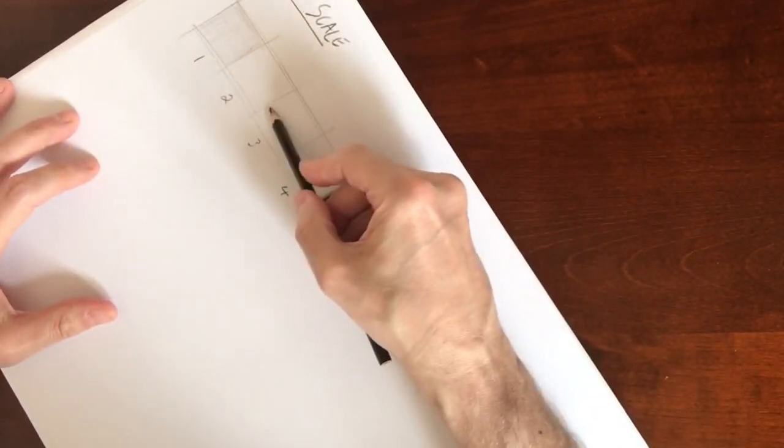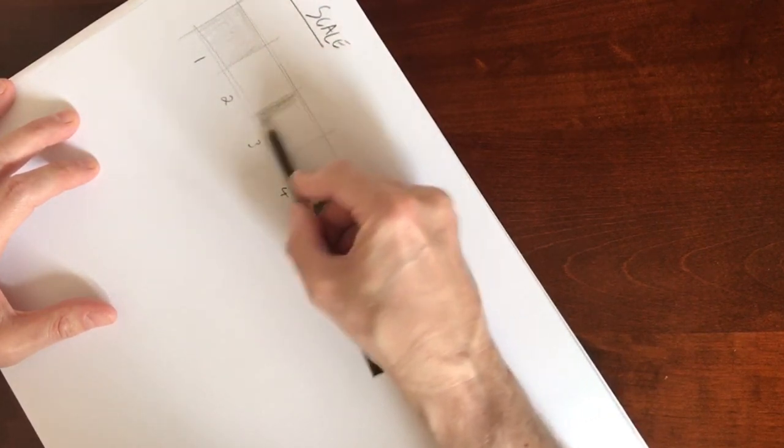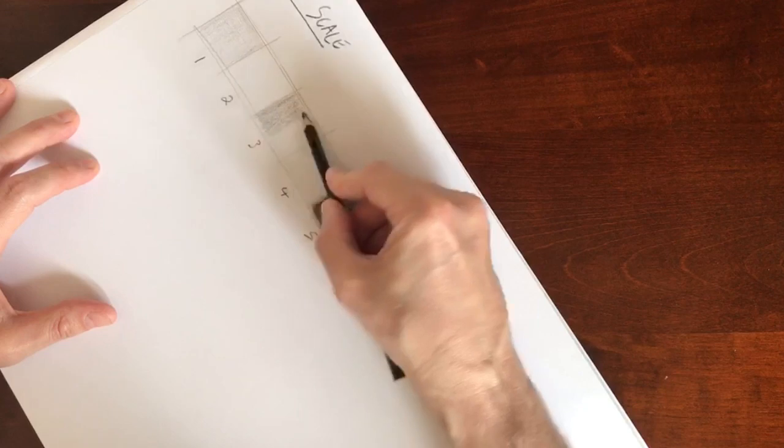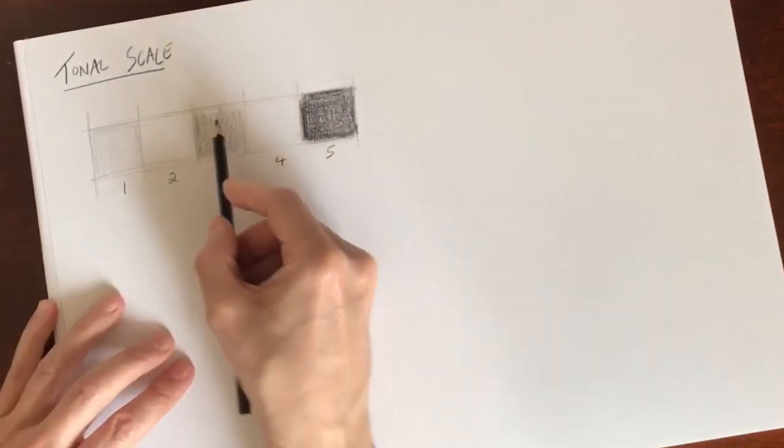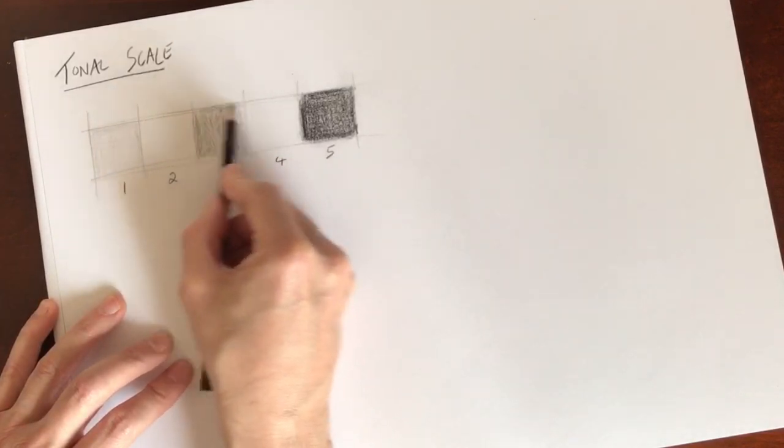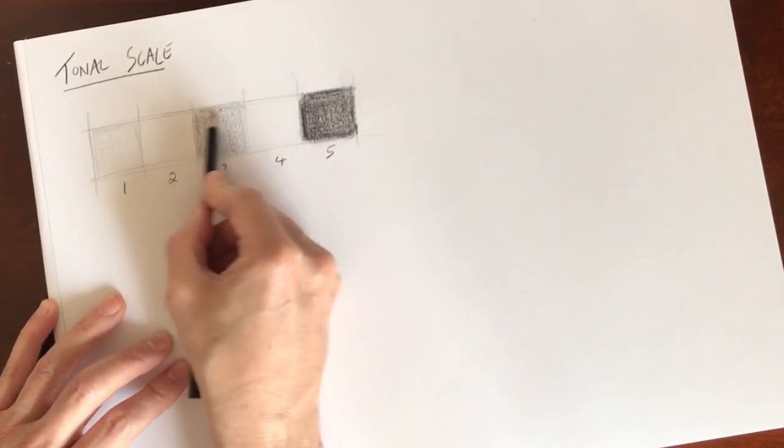The next square that you want to render is the middle square, square 3. Because we have the extremes on either end, the limits on either end, we've got light and dark. The idea is we want 3 to be halfway between 1 and 5 in terms of the appearance of its tone.